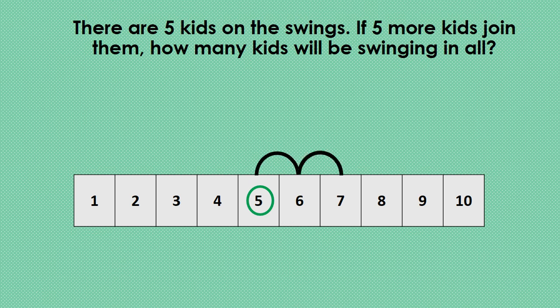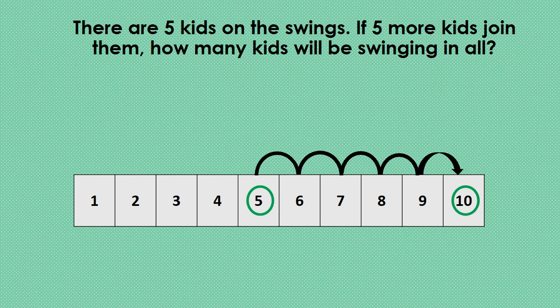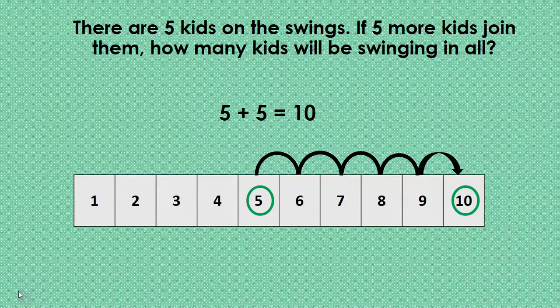One, two, three, four, five. We ended on the number ten. So we know there are ten kids swinging in all. Five plus five equals ten.